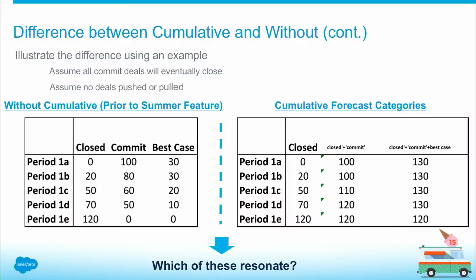To illustrate further, I put a simple example in Excel. I have one period called January — period A. You can see throughout the time frame from A to E how the data changes. Early on, I had nothing closed, 100 in commit, 30 in best case. Let's assume throughout the period, all deals were slowly closed from commit and best case to close. Only at the end, $10 in best case will not close. On the left side, prior to the cumulative feature, this is where the sales team managed their forecast based on where the deals are. The numbers just slowly keep changing from commit and best case to close.